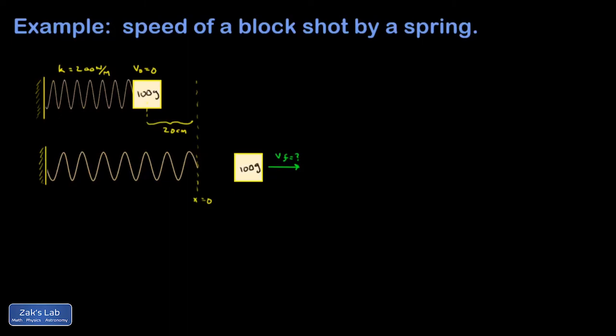In this example, we've got a 100-gram mass that's been compressed onto a spring by 20 centimeters. The spring constant is given as 200 newtons per meter, and we release it from rest here. The spring uncoils and shoots the mass off, and we're trying to find the final speed.